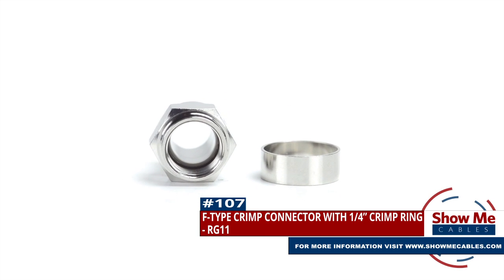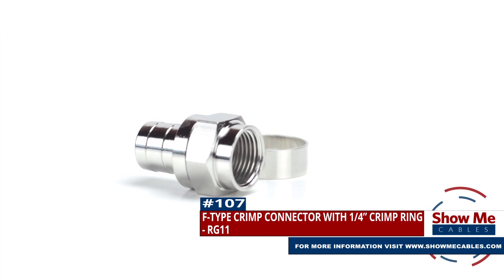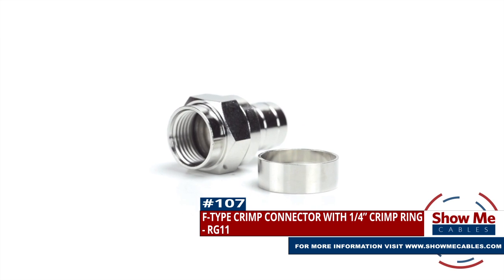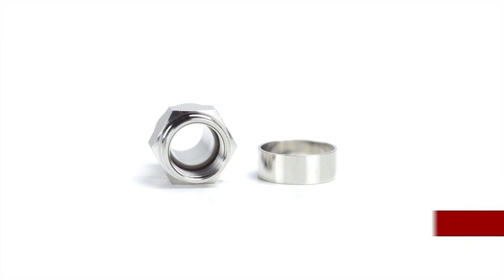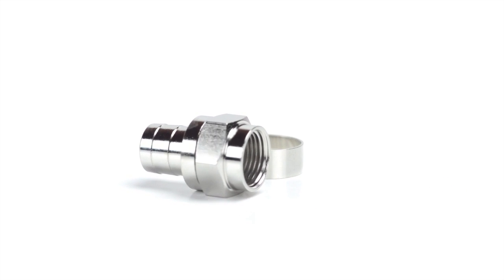Are you looking for a quick and easy DIY installation or repair for your coax cable? Our RG11 F-Type crimp connector with ¼ inch crimp ring will provide a simple solution for your wiring needs.